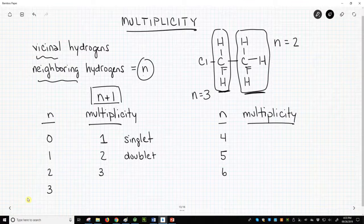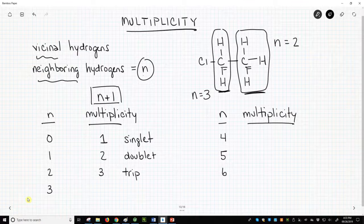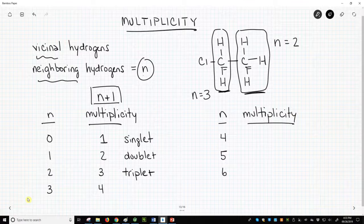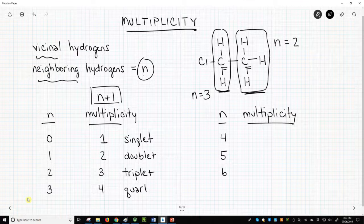If N equals 2, multiplicity is 3. You will observe a triplet. N number of neighbors is 3, multiplicity will equal 4, and we will have a quartet.